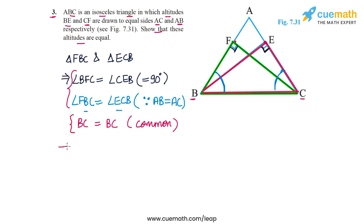So now I can claim that triangle FBC is congruent to triangle ECB using which congruence criterion? Using the ASA, which I'll write as the AAS in this case because the equal side pair is not falling between the equal angle pairs. So I will write: using the AAS congruence criterion.